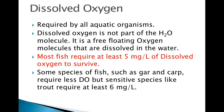Dissolved oxygen is required by all aquatic organisms. It is not part of the H₂O molecule, but rather is free-floating oxygen molecules dissolved in water. Most fish require at least 5 mg per liter of dissolved oxygen to survive. Some species, such as grass carp, require much less DO, but sensitive species like trout require at least 6 mg per liter.